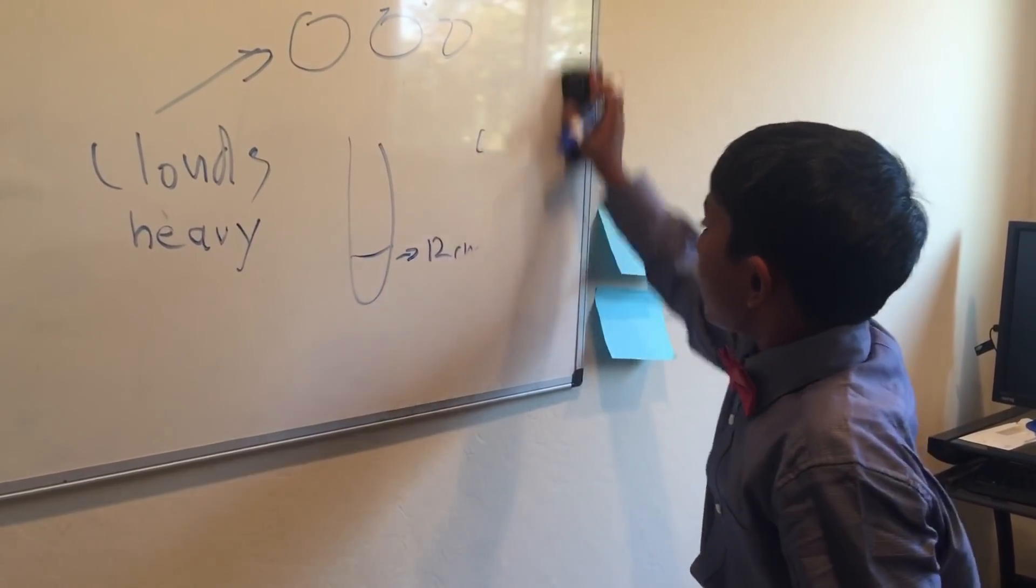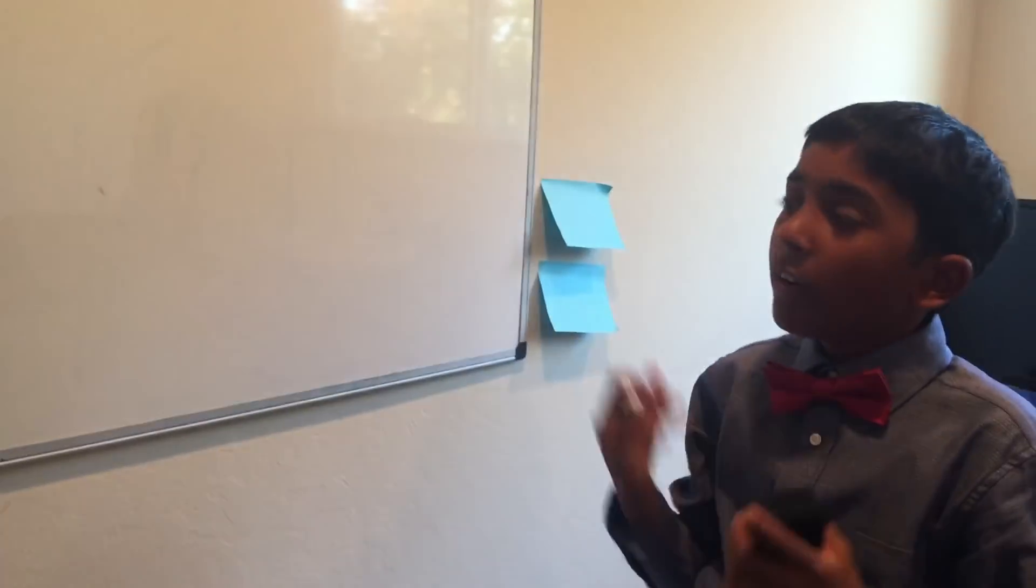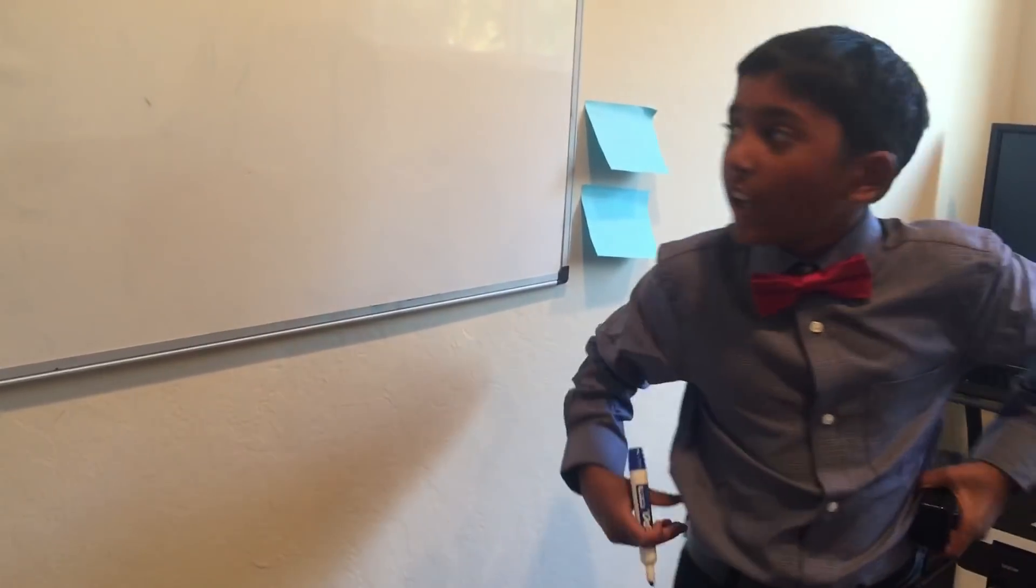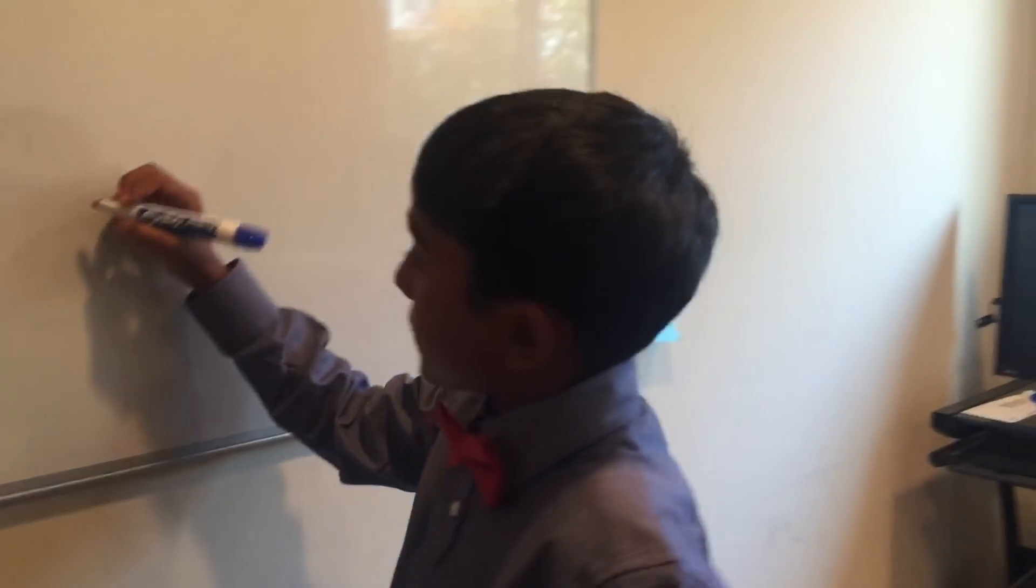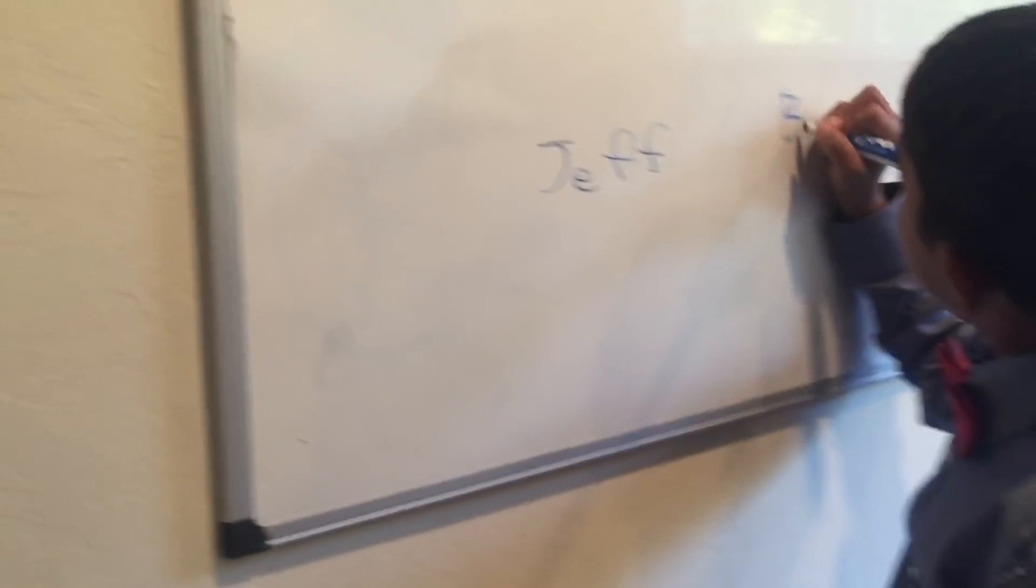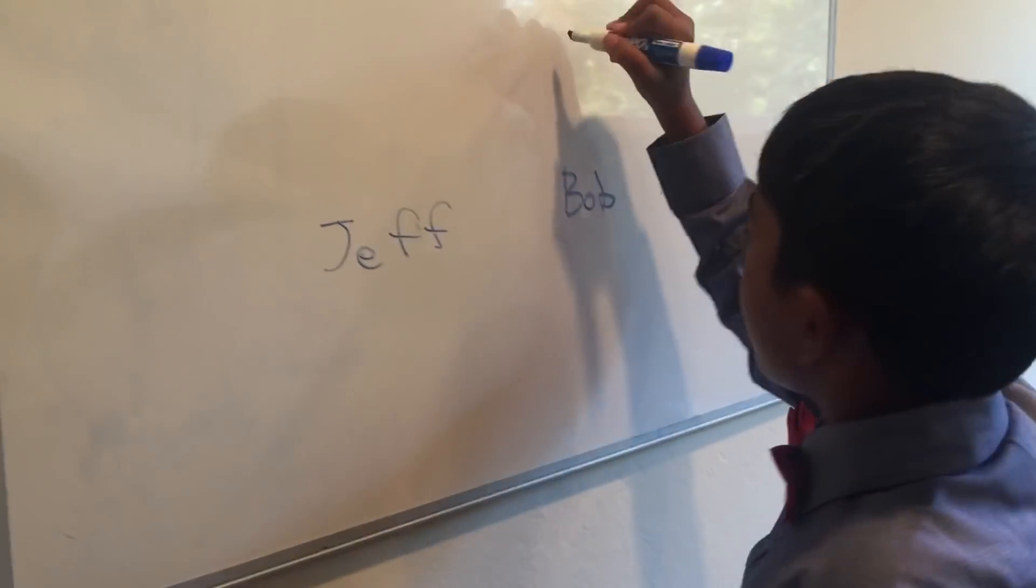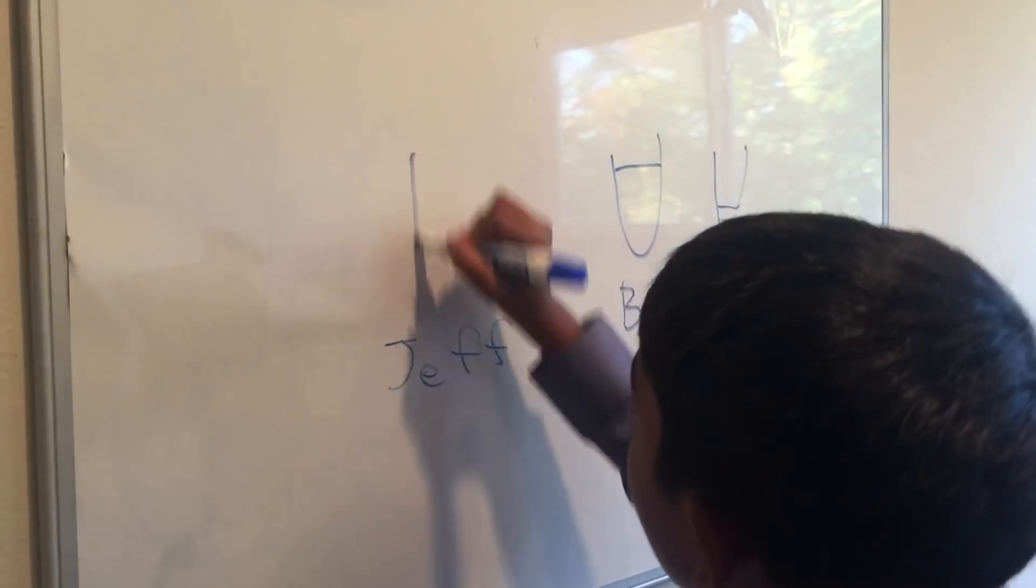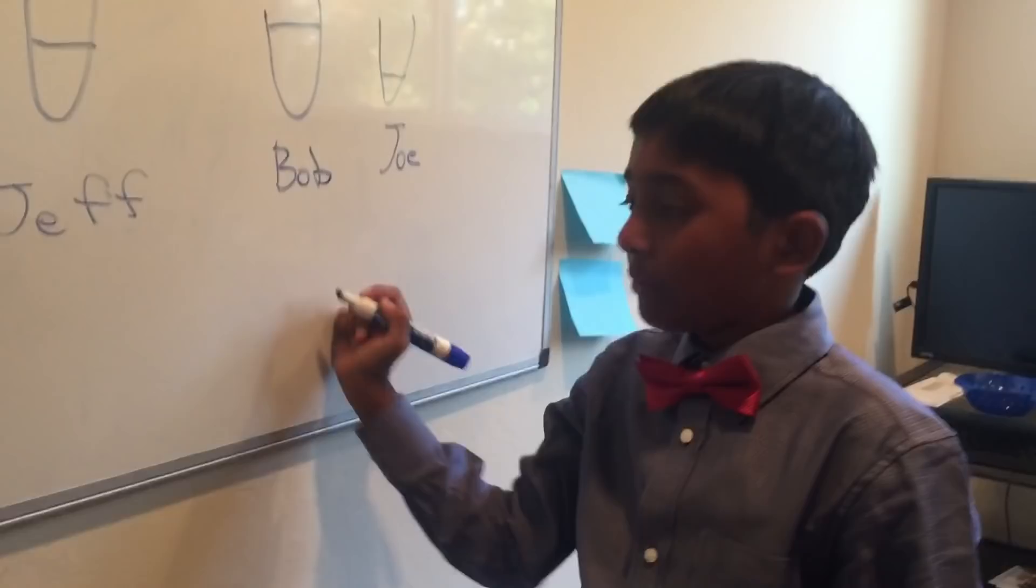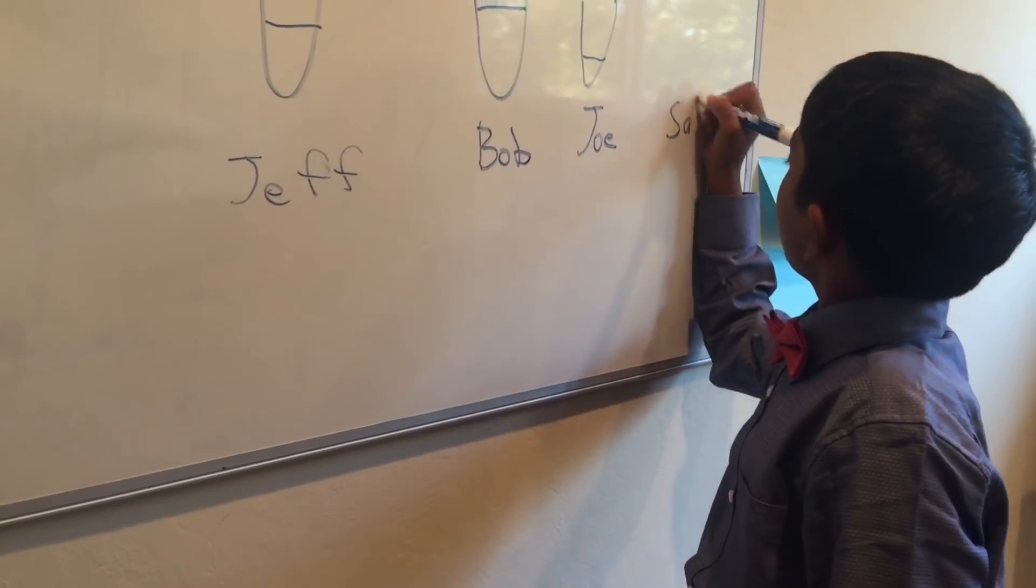So just to make it a bit clearer, let me give you another simple example. You're at this party and you're just serving tea. So there's Jeff, Bob, and Joe.